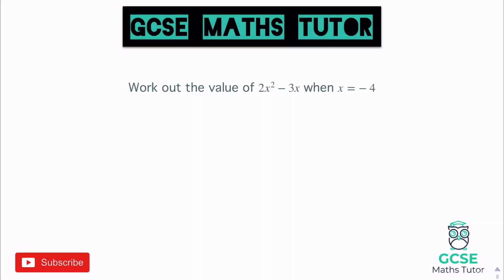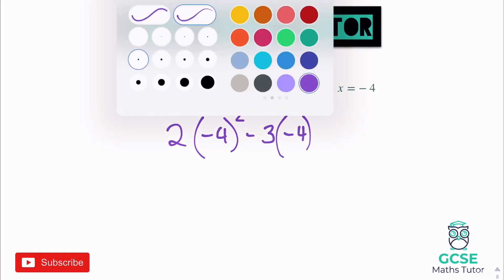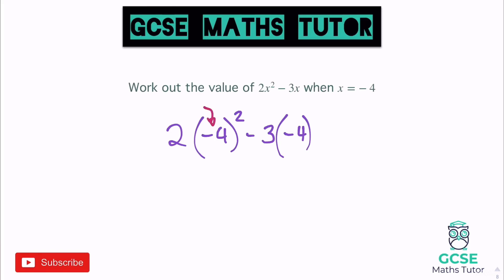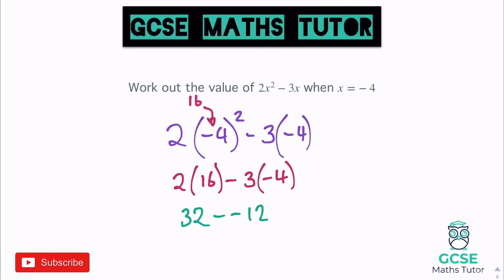One more question: work out the value of 2x² − 3x when x is negative 4. So we have 2 lots of (negative 4) squared, take away 3 lots of negative 4. Negative 4 squared is negative 4 times negative 4, which is 16. Rewriting: 2 lots of 16 take away 3 lots of negative 4 — that's negative 12. Take away negative 12 is a double negative, turning into plus. So we have 32 plus 12, which is 44.